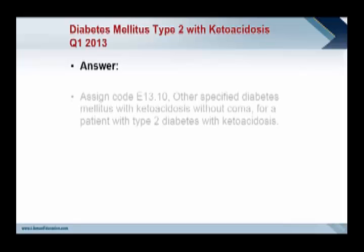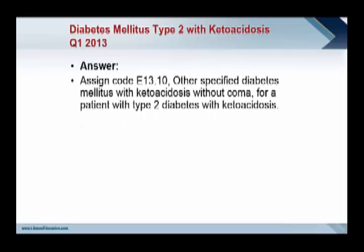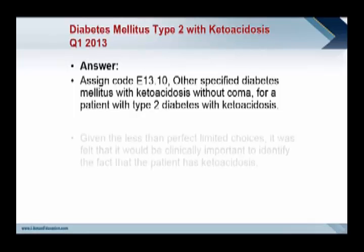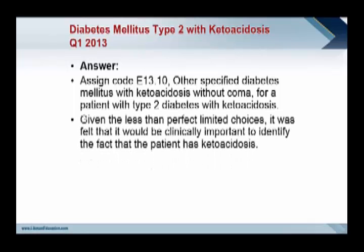The answer tells us to assign code E13.10, other specified diabetes mellitus, which is the code used for drug-induced or other disease-induced diabetes mellitus with type 2. Given the less-than-perfect limited choices, it was felt that it would be clinically important to identify that the patient has ketoacidosis, rather than assign this case to type 2 diabetes.